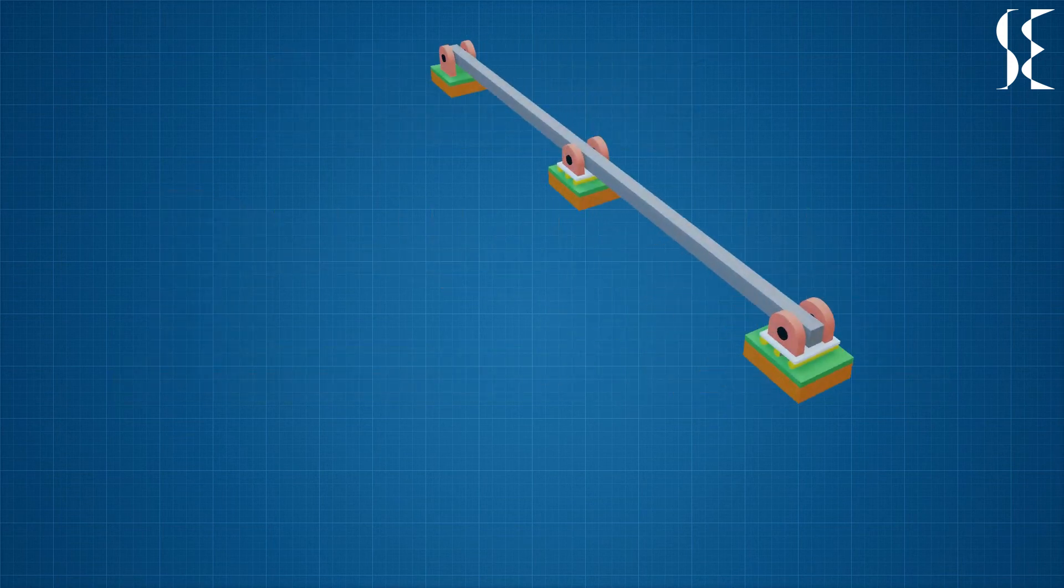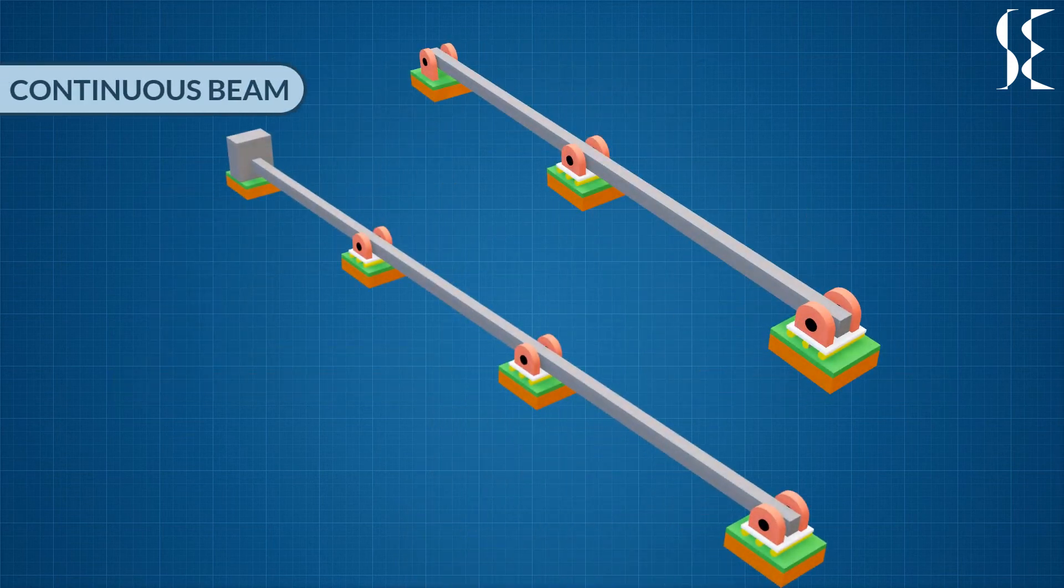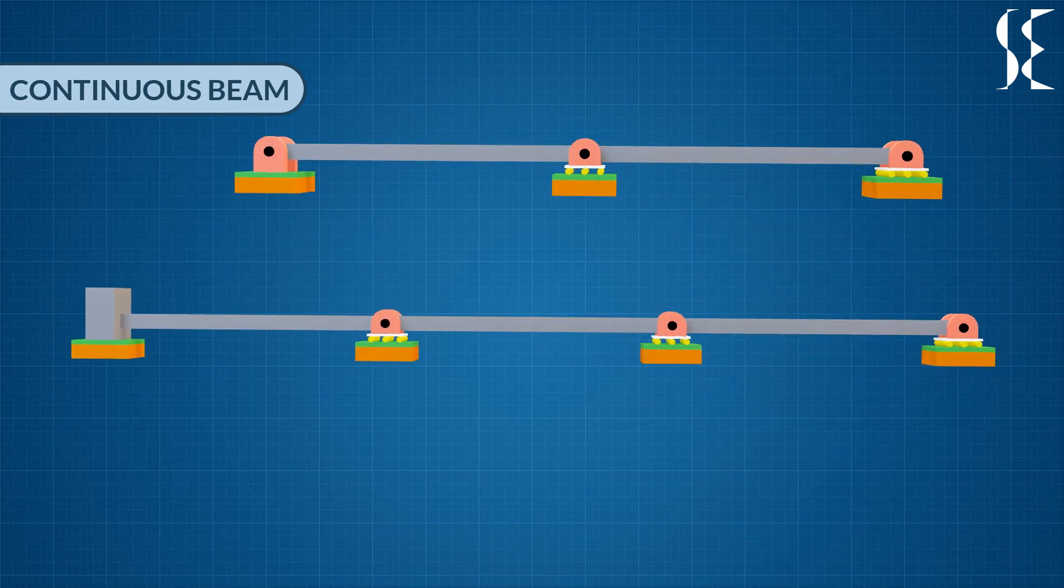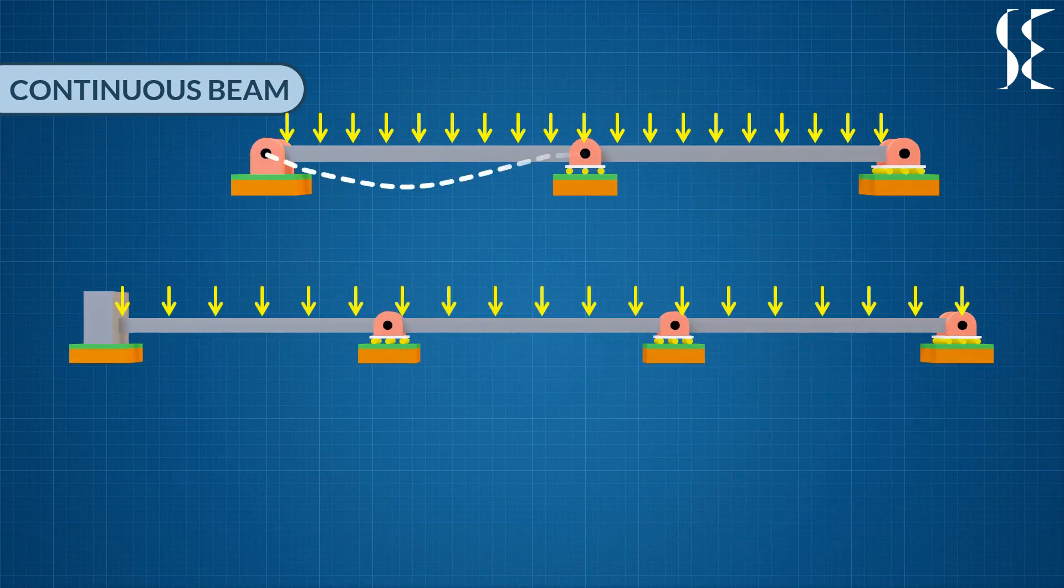Next comes a continuous beam which has 2 or more than 2 spans. The support at the ends may be fixed, pinned or roller. The ends can be overhanging or supported. Deflected shape of the continuous beam on loading would look something like this.